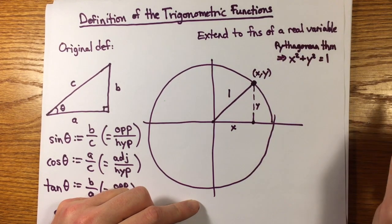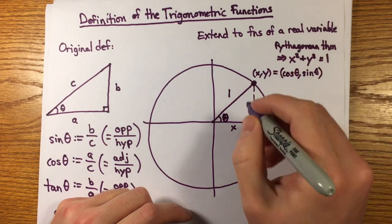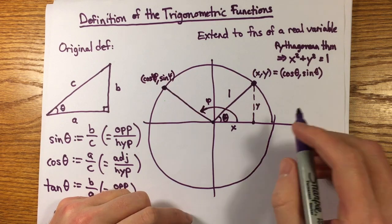The ray that makes angle theta from the positive x-axis in the counterclockwise direction intersects the circle at a single point whose coordinates we define to be cosine theta, sine theta.